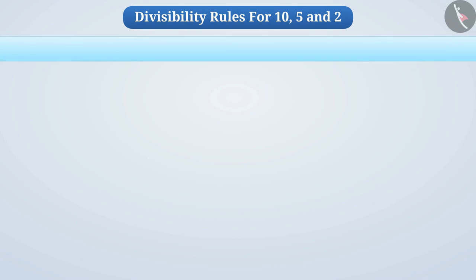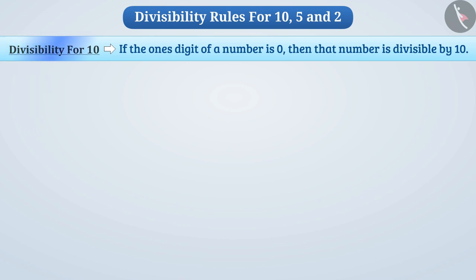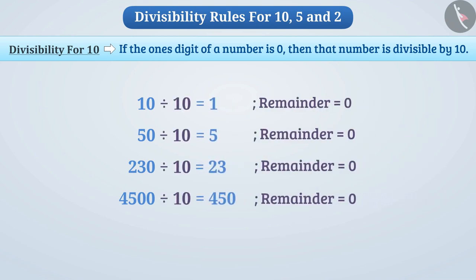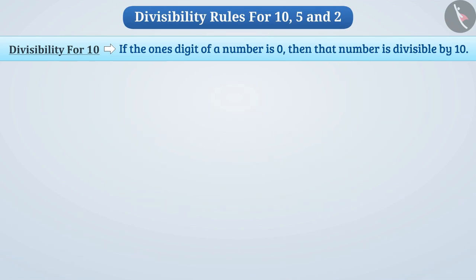Let's talk about the divisibility rule for 10. The divisibility rule for 10 tells us that if the ones digit of a number is 0, then that number is divisible by 10. For example, 10, 50, 230, 4500, etc. — all these numbers are divisible by 10. Let's understand how this rule works.